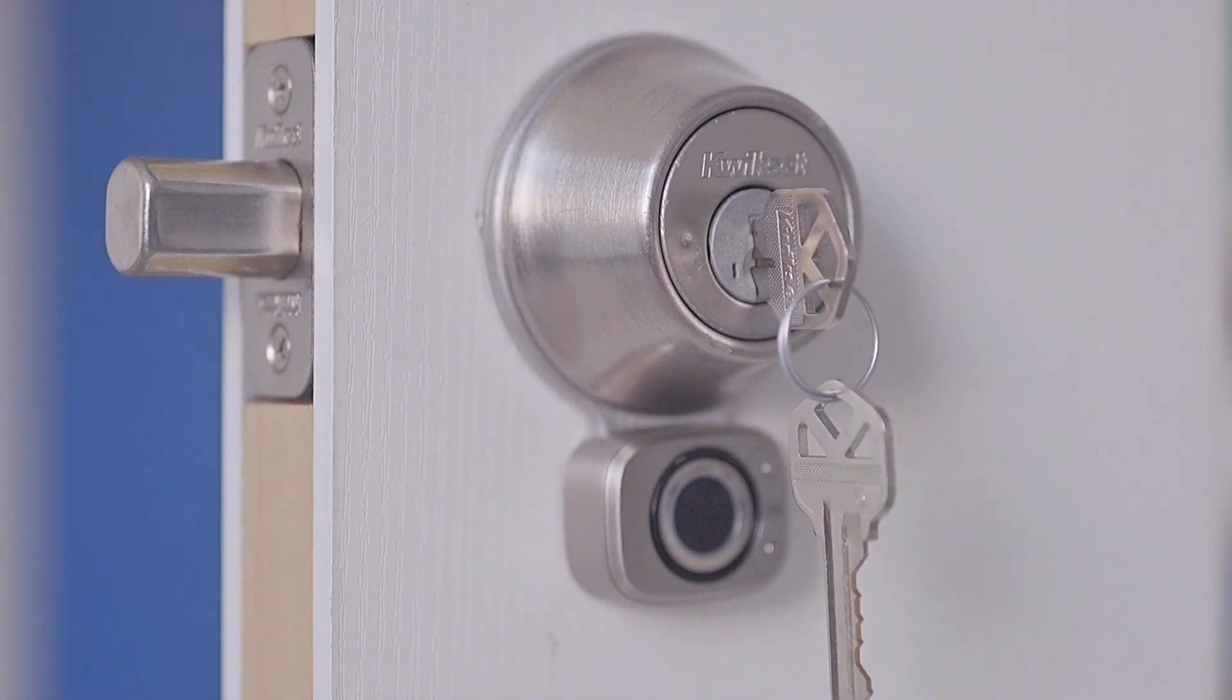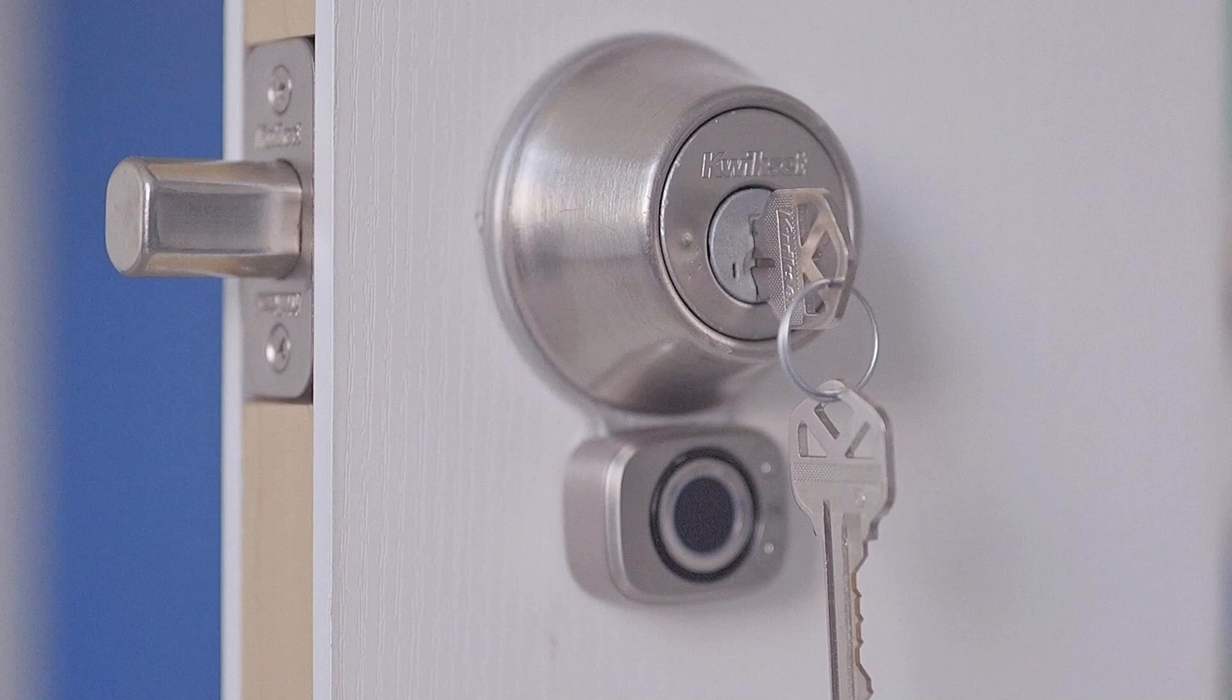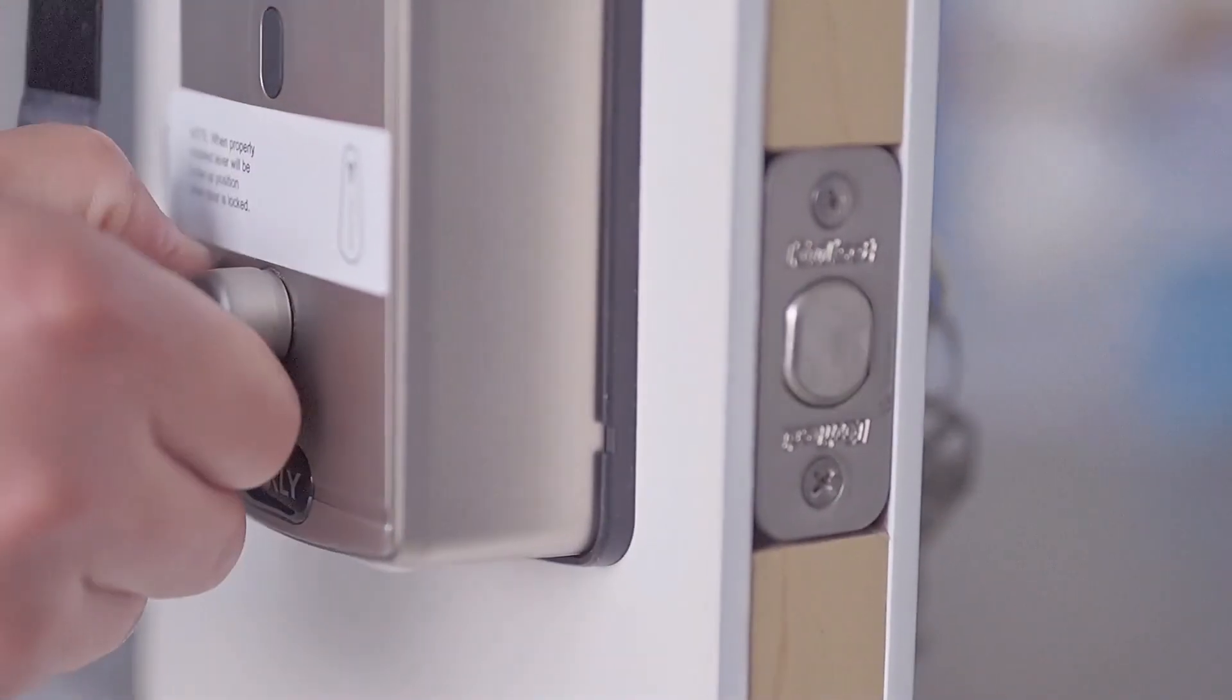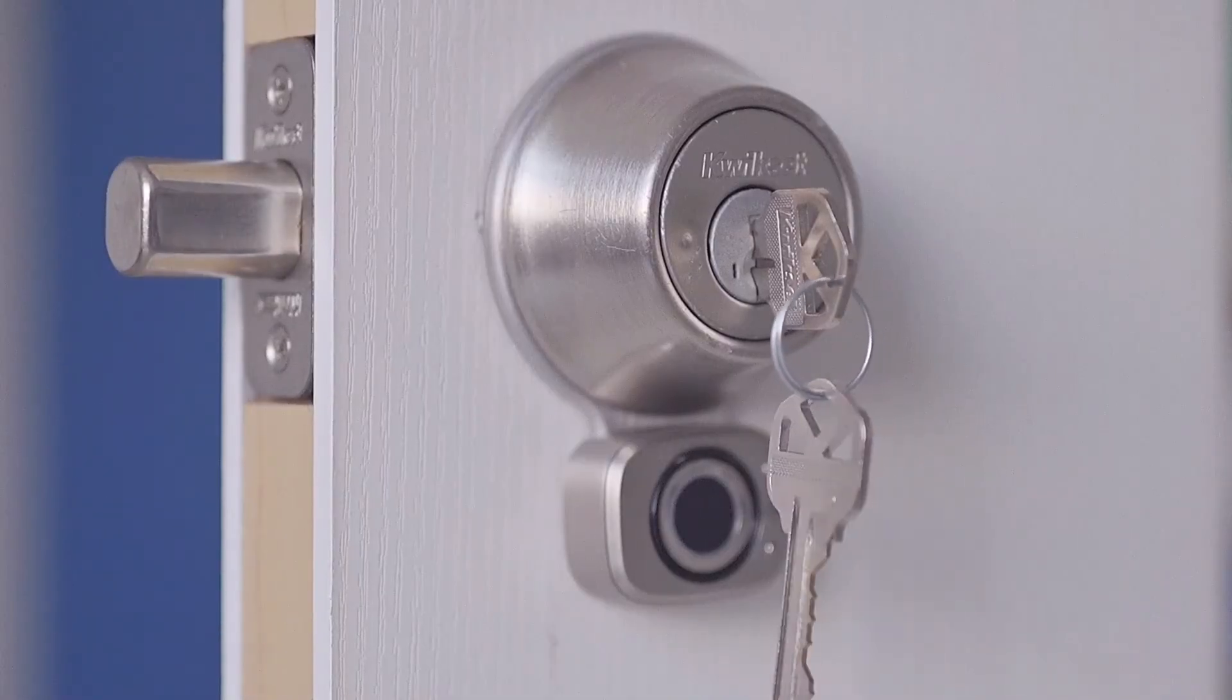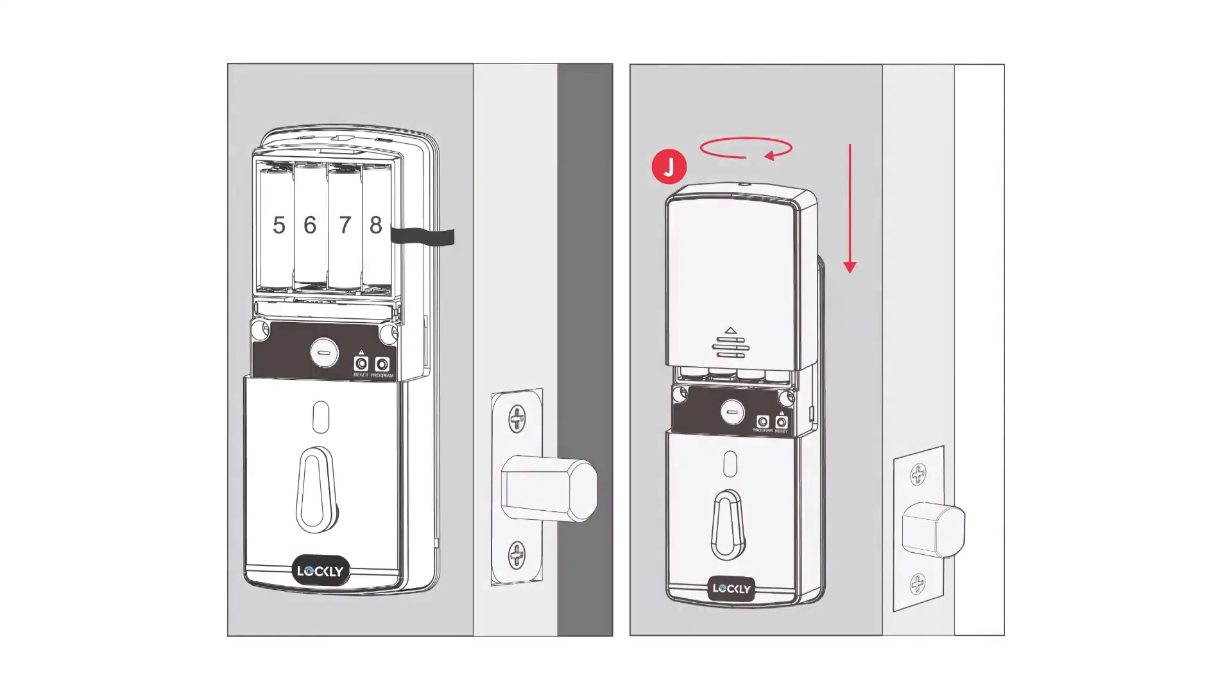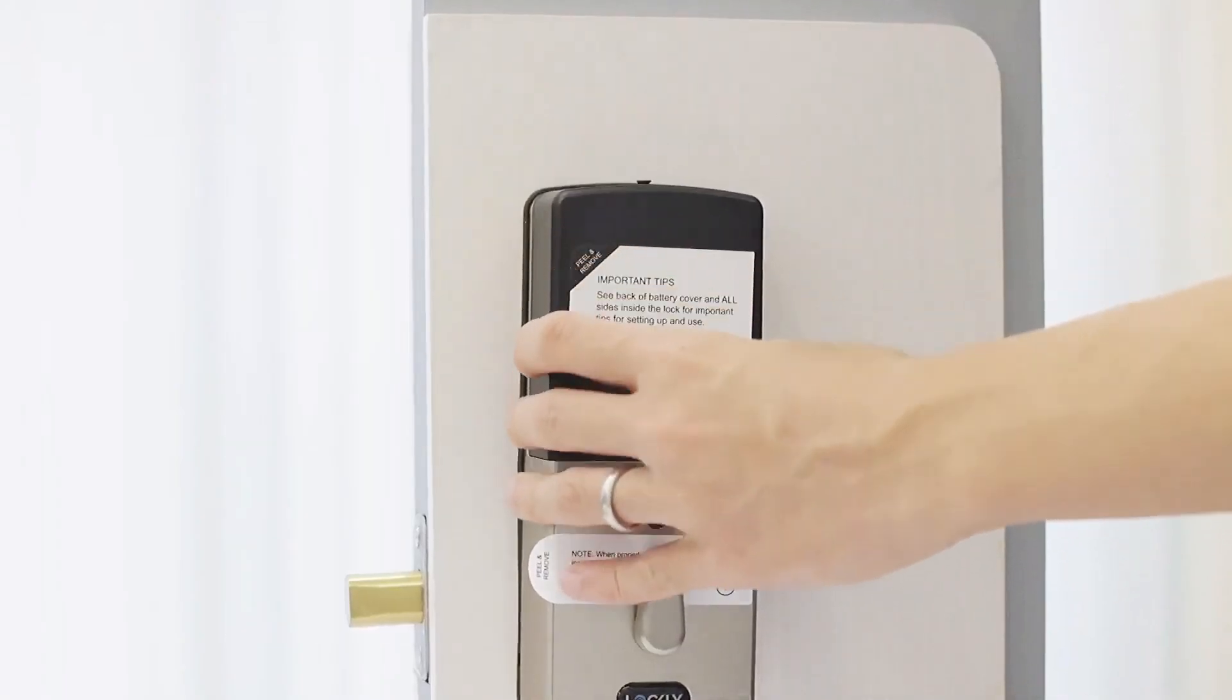If the lock is not properly installed it will open and close repeatedly once self-check completes. Ensure the lock operates smoothly by manually locking and unlocking the door using the thumb turn on the interior assembly. Install the battery cover J and secure it with screw on top.